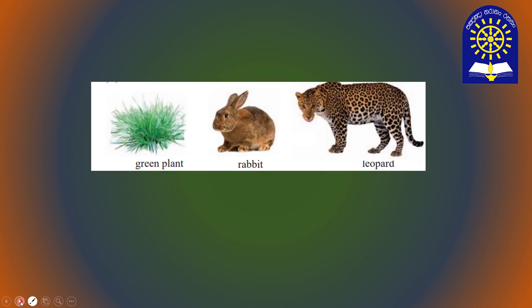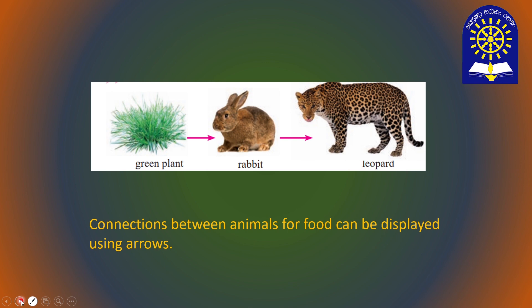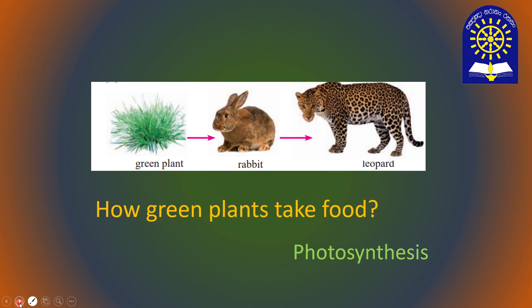Here is a picture illustration of this connection. We can use arrows to show the connection. The arrowhead should be pointed to the predator or eater. Rabbit is the food of leopard and the leopard takes energy. The rabbit eats grain plant and takes energy. Then how does the grain plant get food? It produces its own food — that is photosynthesis.